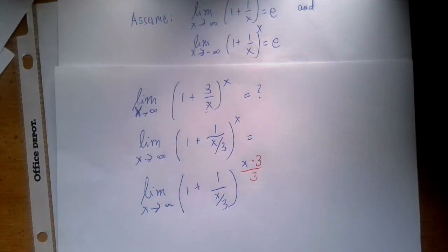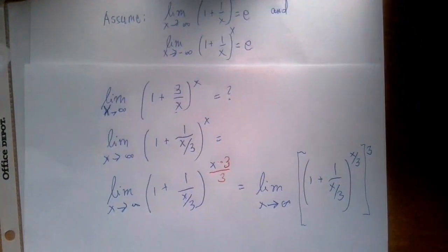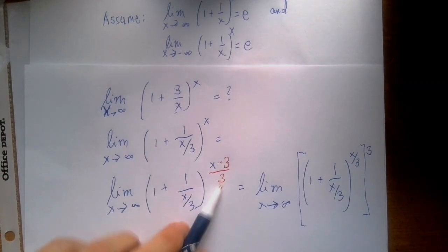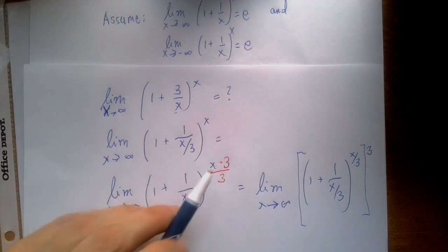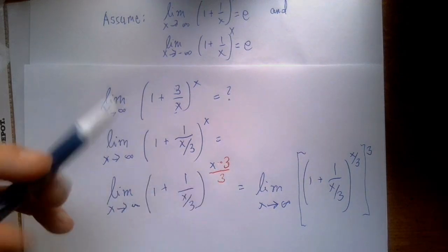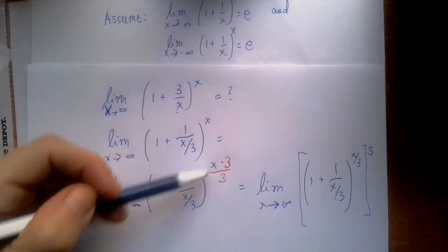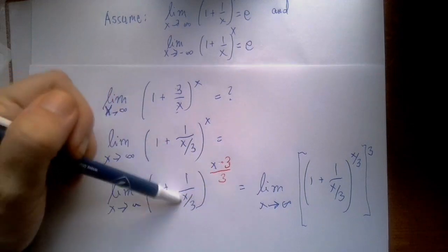So now we're almost there. So we smuggled in the 3. We need the denominator 3. We don't need the numerator 3. And actually we need to separate them together because our goal is to match the exponent here with the denominator there.